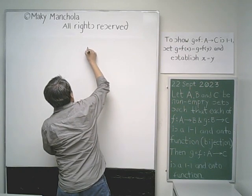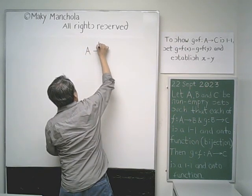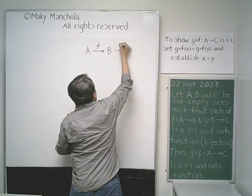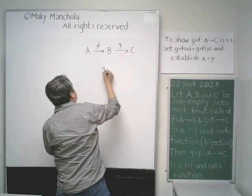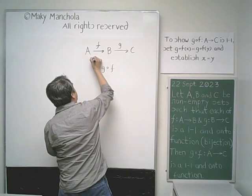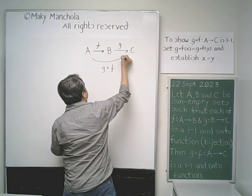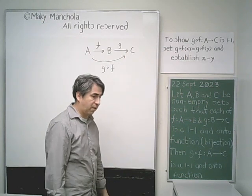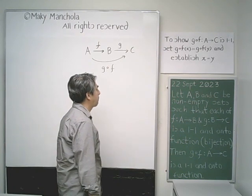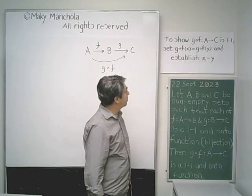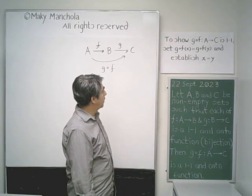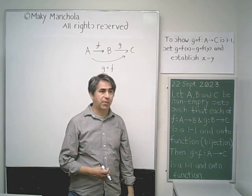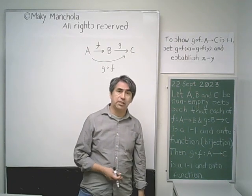Here we have F is a function from A to B, G is a function from B to C, and G composed with F is a function from A to C. To show that G composed with F is 1-to-1, set G composed with F of X equal to G composed with F of Y, and then establish that X equals Y.